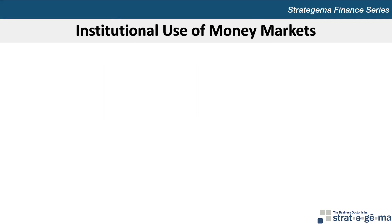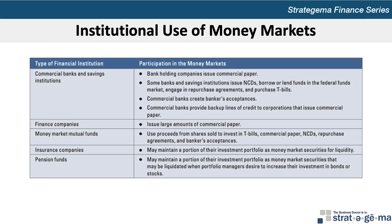Financial institutions purchase money market securities in order to earn a return while maintaining adequate liquidity. Some financial institutions issue their own money market instruments to obtain cash. For example, depository institutions issue NCDs, and bank holding companies and finance companies issue commercial paper. Depository institutions also obtain funds through the use of repurchase agreements or in the federal funds market.